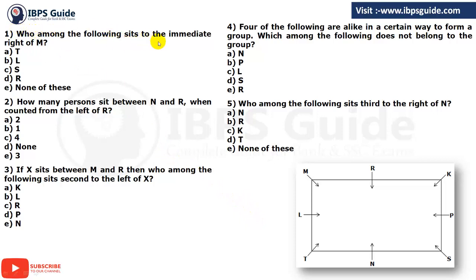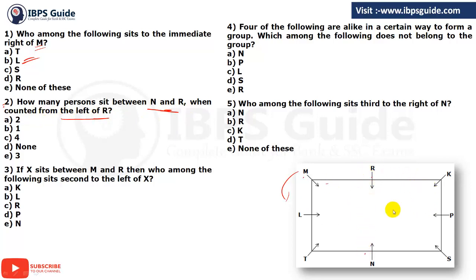Who among the following sits to the immediate right of M? M is here, and to the immediate right of M it is L — that is option number B. Second: how many persons sit between N and R when counted from the left of R? Since N and R are sitting opposite each other, there are the same number of persons to either side — that is three persons, option number E.